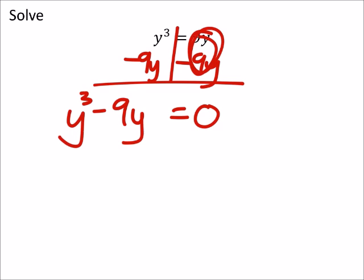Well, I've got two terms now that have a y in common. So I'm going to factor out a y from these, which leaves me with y squared minus 9, and this equals zero.